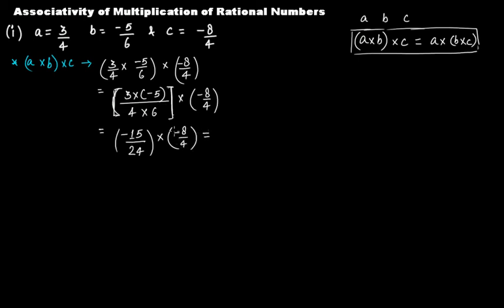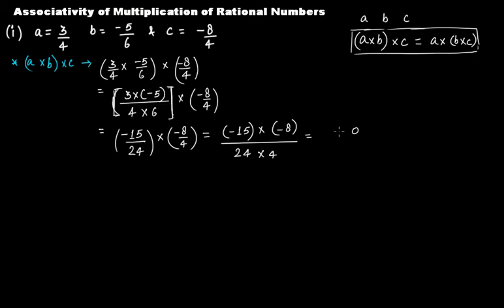We multiply the numerators together: -15 × -8, and the denominators: 24 × 4. Since we are multiplying two negative integers, the result will be positive. So we get 15 × 8 = 120, and 24 × 4 = 96. Therefore (a × b) × c = 120/96.